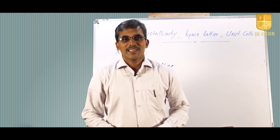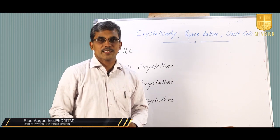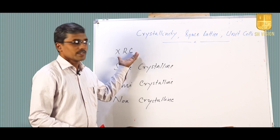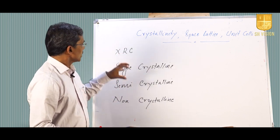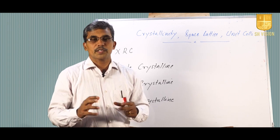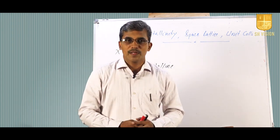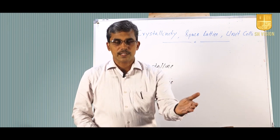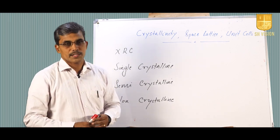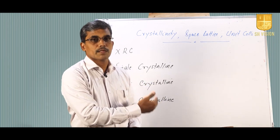Today we will extend our understanding on single crystalline, semi-crystalline, and non-crystalline systems which we had seen in the previous lecture. In that lecture we started with an introduction to X-ray crystallography. A crystal is nothing but a solid with regular periodic arrangement of atoms and molecules inside. Depending on the extent of periodicity, we divide this into a single crystalline system, polycrystalline or semi-crystalline system, and amorphous or non-crystalline system. The same material may be available in one of these forms.